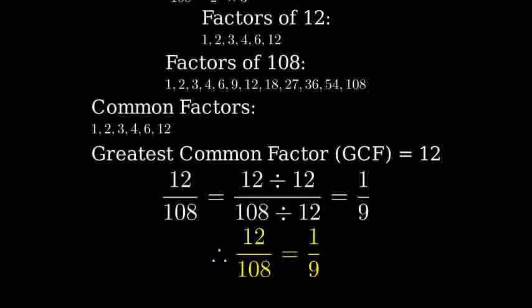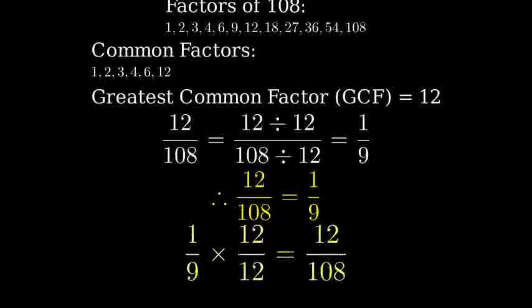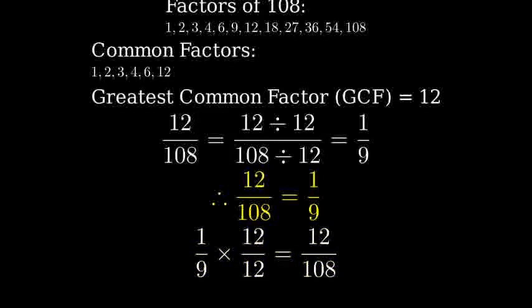Therefore, 12 over 108 simplifies to 1 over 9. To verify our answer, we can multiply both the numerator and denominator of one-ninth by 12, and we should get back to our original fraction of 12 over 108.